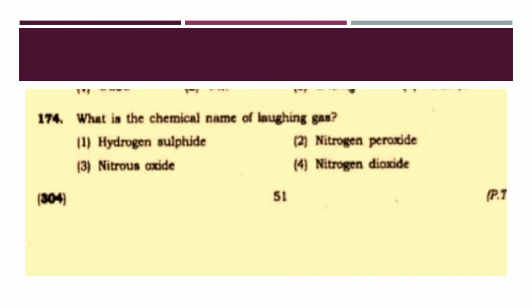The next question: What is the chemical name of laughing gas? The options are: Hydrogen sulfide, Nitrogen peroxide, Nitrous oxide, or Nitrogen dioxide. The right answer is Option number three: Nitrous oxide.